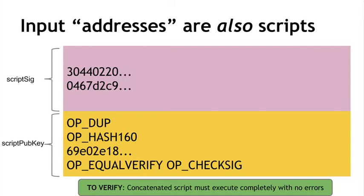When a transaction is being validated, the two scripts get pasted together, they get run. And if the concatenated script can run without any errors, this is considered a valid transaction.